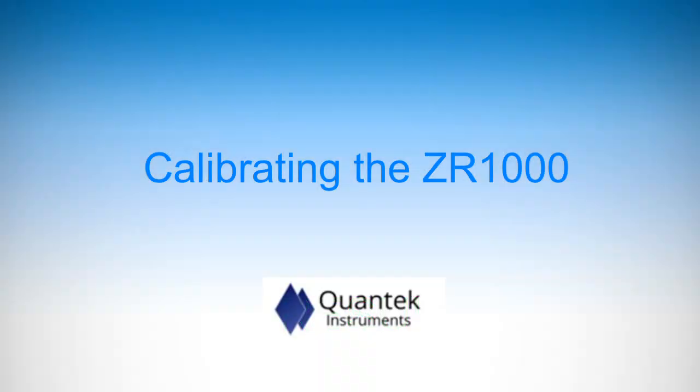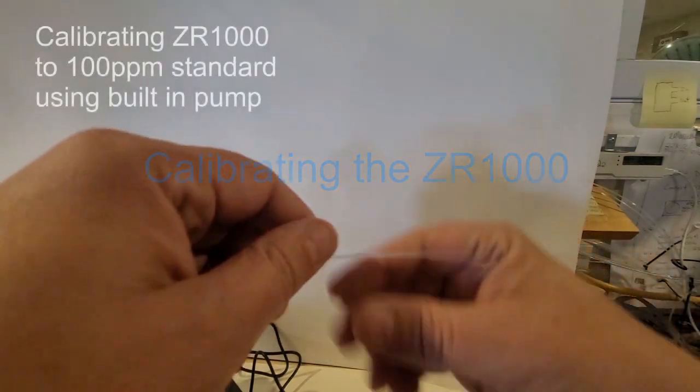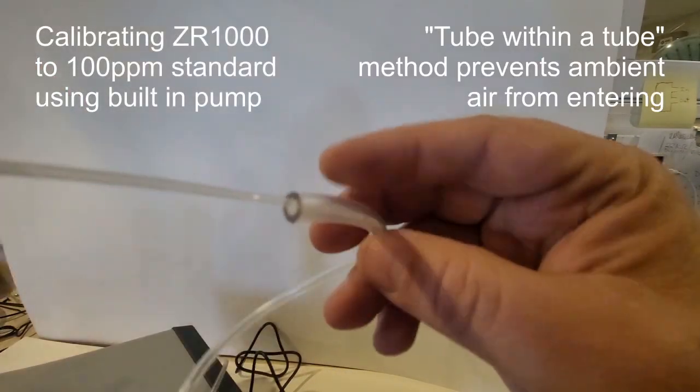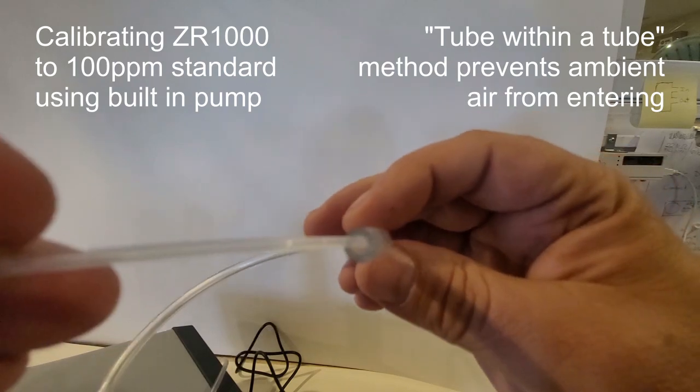Next, let's demonstrate calibration. We'll be calibrating the instrument today to a 100 ppm oxygen standard. For this calibration, we'll be using the pump.